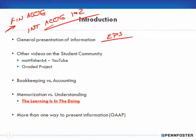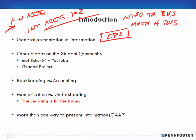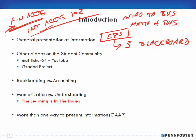As an example, earnings per share was covered in Intro to Business and in Math for Business and Finance, and it will be covered again in financial accounting — but the calculation is very simplistic here. By the time you get through intermediate accounting, the textbook spends one whole chapter specifically on earnings per share, and that calculation written across a blackboard is three blackboards long. Financial accounting is a high-level presentation, but you have to start somewhere, and as you progress as an accountant you go through deeper and deeper levels of understanding those concepts.